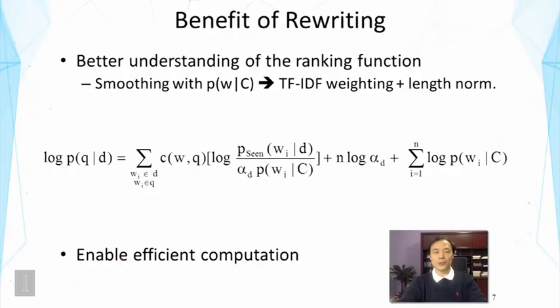So I showed you how we rewrite the query likelihood retrieval function into a form that looks like the formula on this slide after we make the assumption about smoothing the language model based on the collection language model. Now if you look at this rewriting, it actually would give us two benefits.